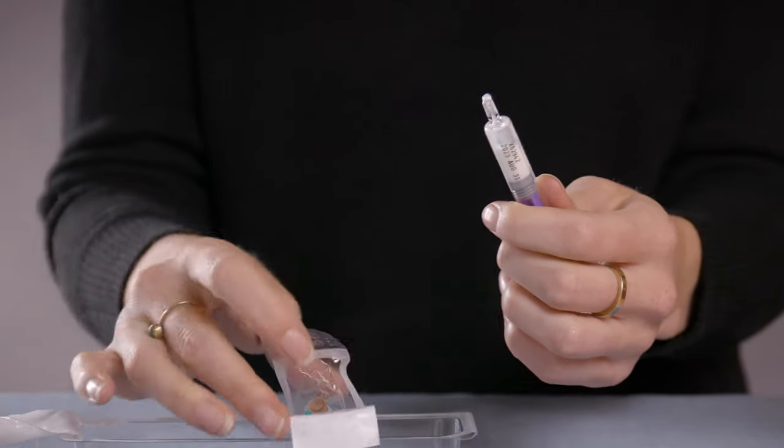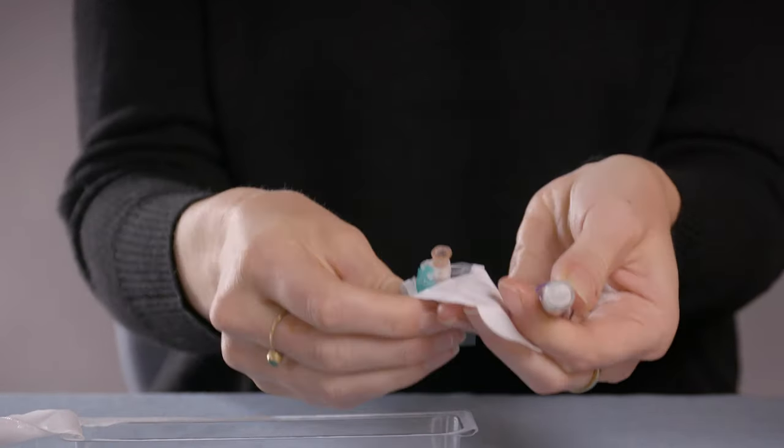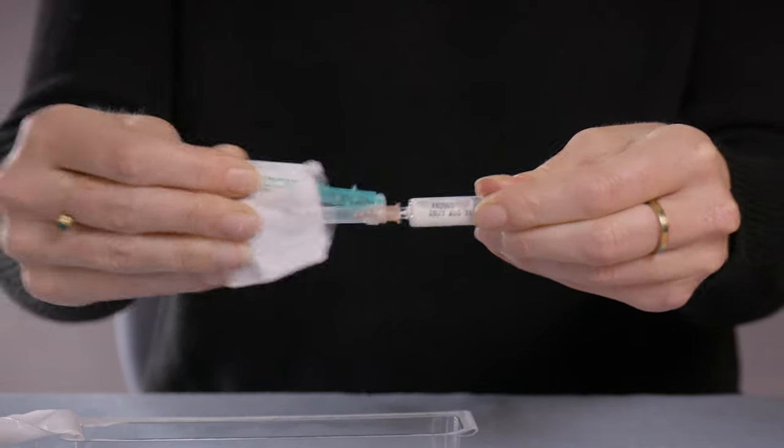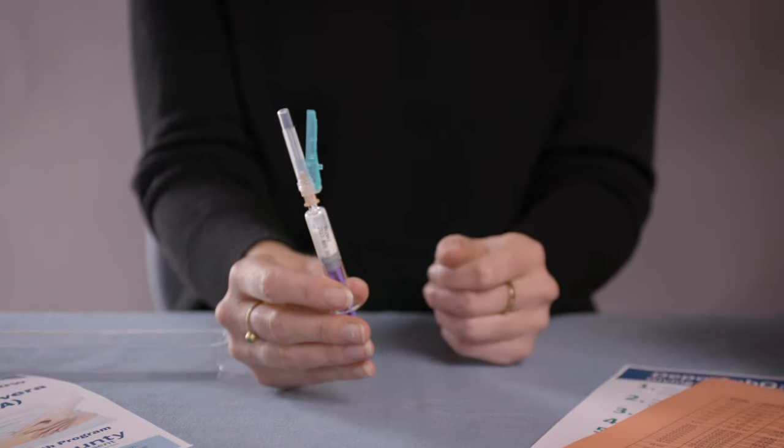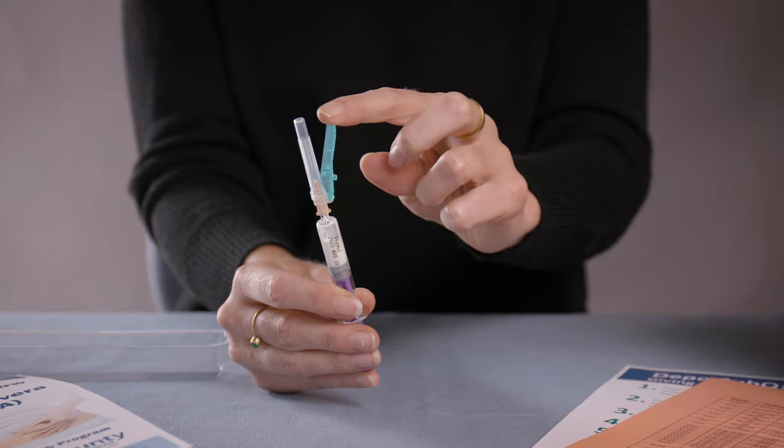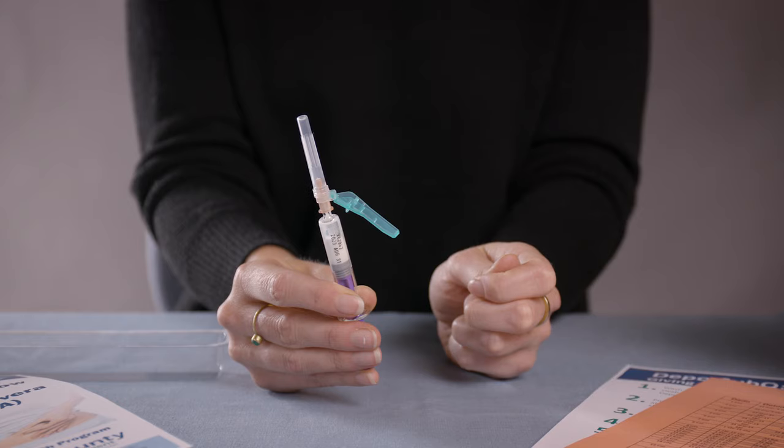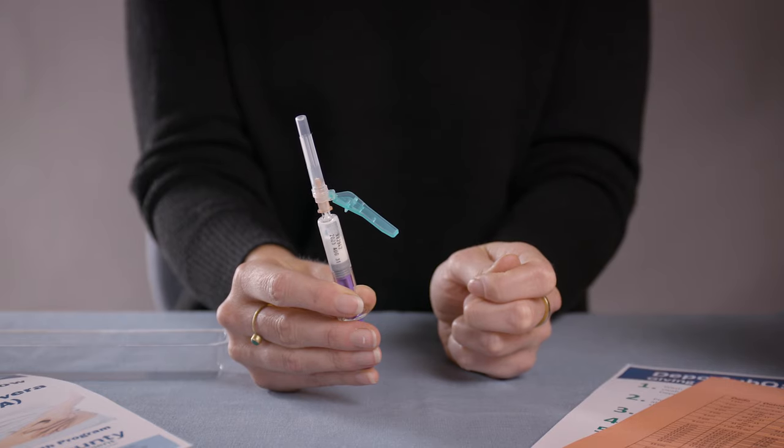Remove the gray rubber cap from the syringe and attach the needle by pushing and twisting it into place. The needle has a safety shield that you will use after you give yourself the injection to cover the needle. For now, place the shield away from the needle so that it will not be in the way when you give yourself your injection.